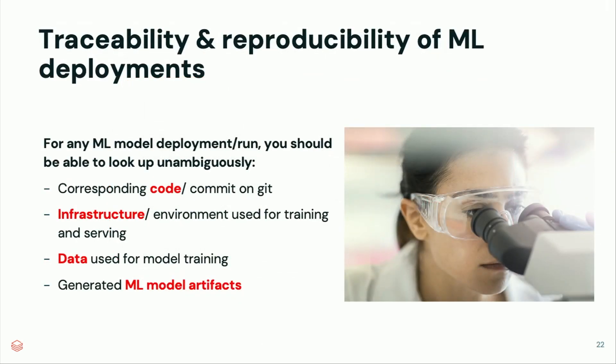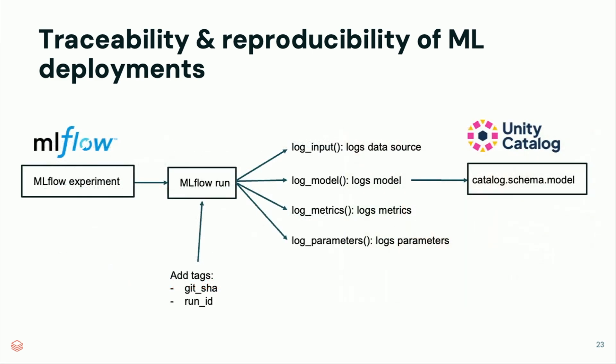Traceability and reproducibility are really important for machine learning deployments. For any model run and deployment you need to look up: what code and Git commit was responsible, the infrastructure and environment used for training and serving, the data used for model training, and the generated model artifacts. These components are required to go back to any experiment at any point in time. MLflow provides a lot of possibilities to log this information — you can log inputs, data, metrics, parameters, and other artifacts per run.